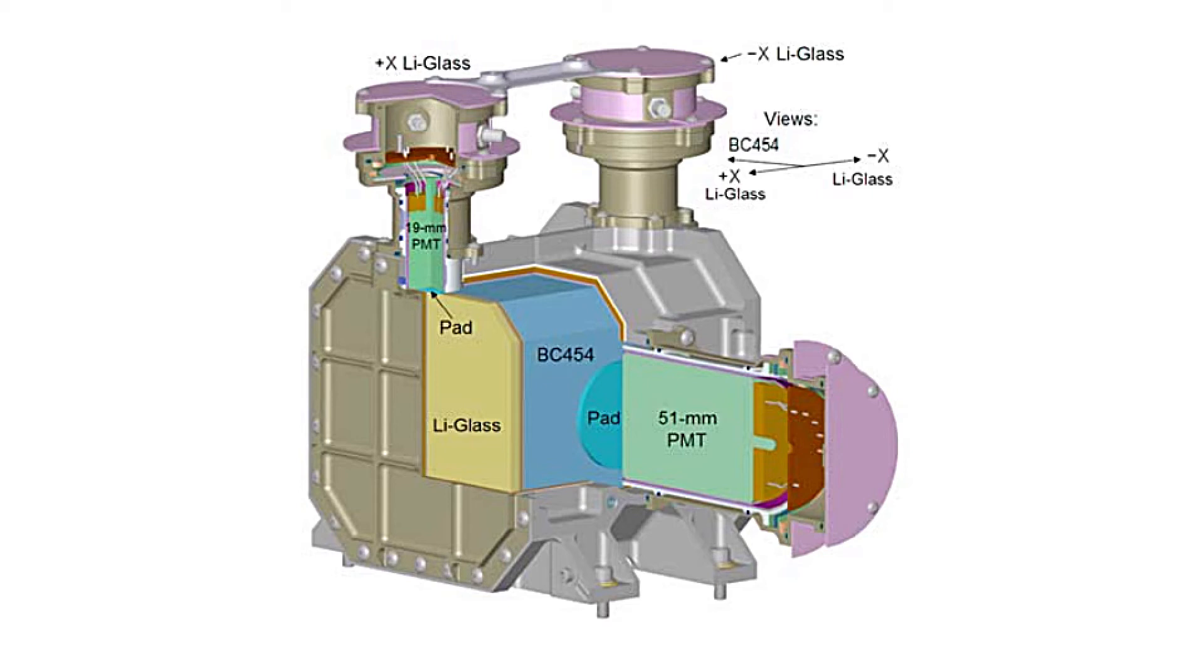For this reason, the neutron spectrometer onboard the Messenger spacecraft has three detectors. Two of these detectors use a glass scintillator to capture neutrons. They are more sensitive to thermal and epithermal neutrons. The third detector has a plastic scintillator which is more sensitive to fast neutrons.